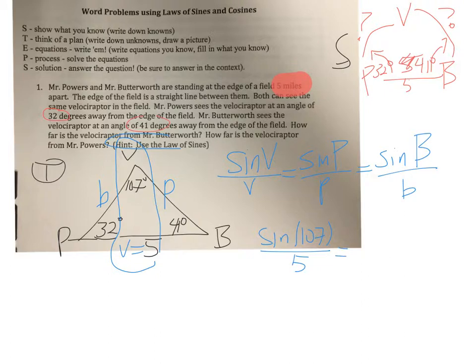So I might write an equation that looks like sine of 107 over 5. And let's say Mr. Powers is a little bit older. He might need a little bit more time to get away. So I probably should solve his problem first. And in doing that, we get sine of 41 over B.